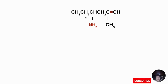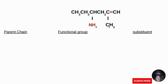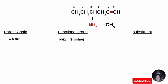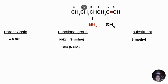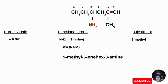For the next example, we are given CH3-CH2-CH-CH2-C=CH2 with an NH2 group and a methyl substituent. We have two different functional groups. NH2 has higher priority, so we count from left to right. The parent chain has 6 carbons, so it is 'hex'. The NH2 is at carbon 3 giving '3-amine'. The alkene double bond is at carbon 5 giving '5-ene'. The substituent is one carbon at carbon 5, so it is '5-methyl'. The name of the compound is 5-methylhex-5-en-3-amine.